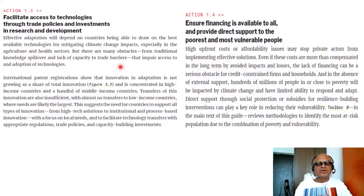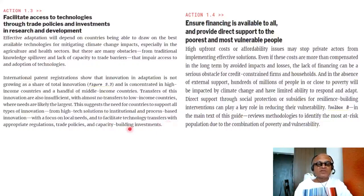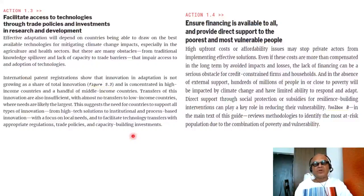Socio-technical transformations are not always straightforward. Just because a technology is available that could reduce agricultural risks or health impacts doesn't mean it will immediately be assimilated or adopted by societies. International patent registration shows that innovation in adaptation is not growing as a share of total innovation and is concentrated in high-income countries and a handful of middle-income countries. Transfers of this innovation are also insufficient, with almost no transfers to low-income countries where needs are likely the largest. This suggests the need for countries to support all types of innovation and to facilitate technology transfers with appropriate regulations, trade policies, and capacity-building investments. The COVID pandemic gives us a good example of what happens if you don't transfer technology to all.